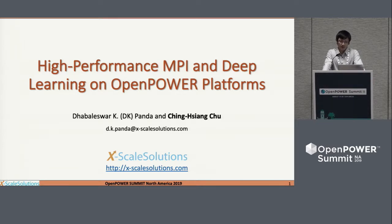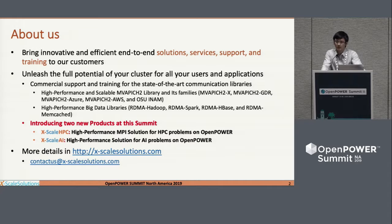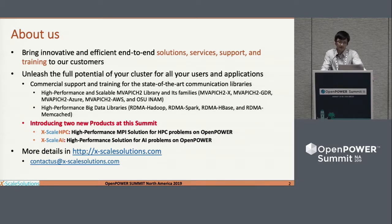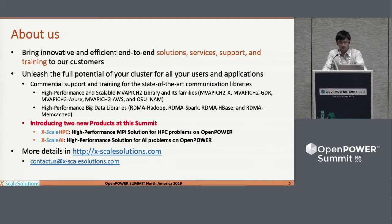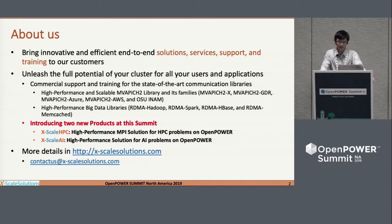Today I'm going to present the work I did this summer at X-Scale Solutions. It's about high-performance MPI and deep learning on open power platforms. A little bit of information about X-Scale Solutions: our main goal is to provide solutions, service support, and training to customers who want to do something on HPC clusters, supercomputers with maybe thousands of nodes — CPUs or GPUs — and if they don't know how to scale, we're here to help using communication libraries like MPI or big data libraries like RDMA-based Hadoop and Spark.